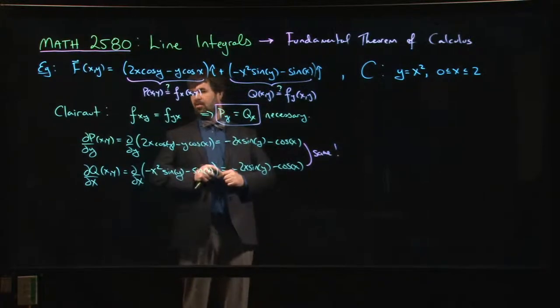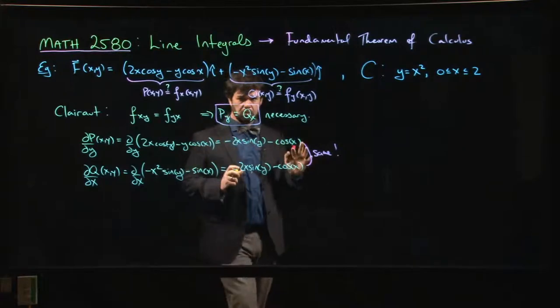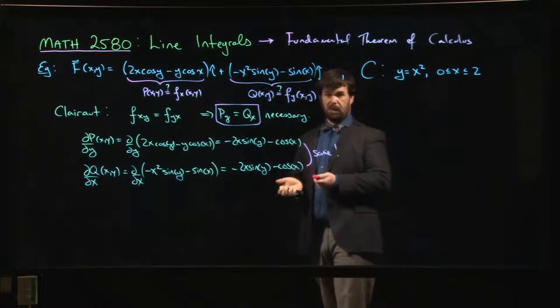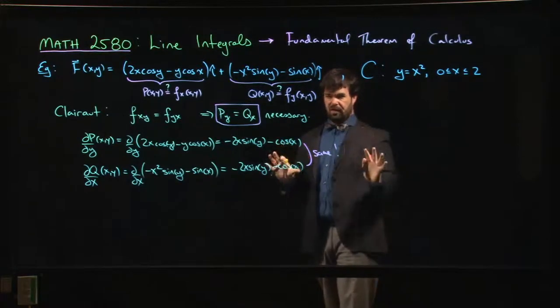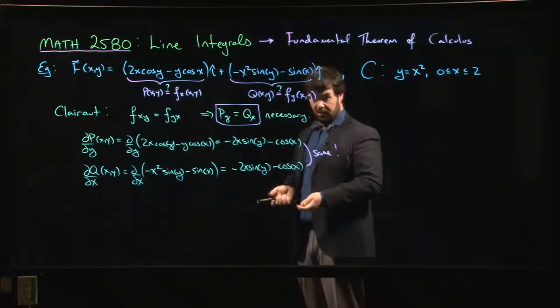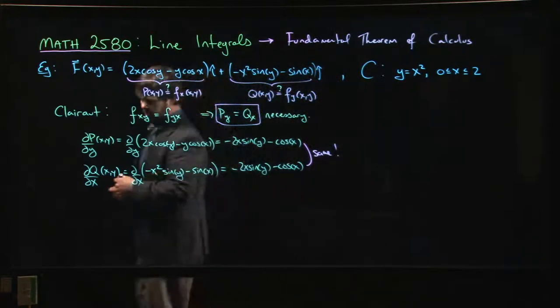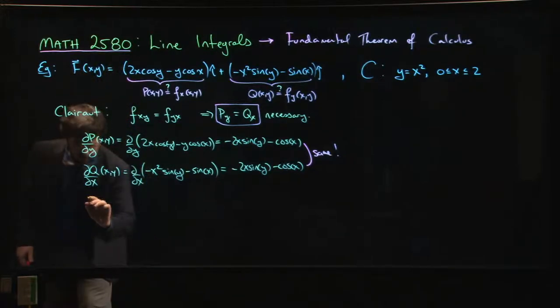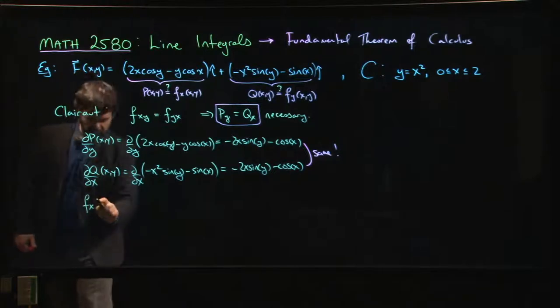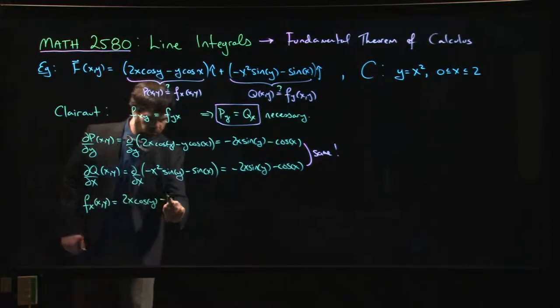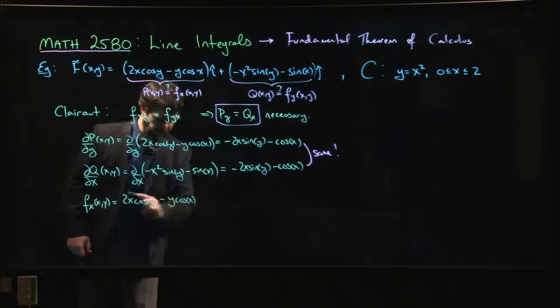So that tells me that my function most likely is a gradient, it most likely comes from some potential function f. We've seen examples, we did one in class, we've seen that it's not a guarantee, things can still go wrong, but it makes it quite likely. So now we say, on the one hand, this lets me assume that my x derivative must be 2x cos y minus y cos x.